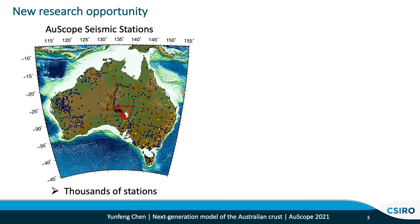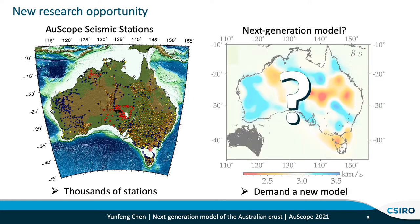There have been some new recent opportunities come along with the AUSCOPE project. Thousands of seismic stations have been deployed over the past 30 years, and more importantly, these data are publicly available and shared among the scientific community. This really established a solid data foundation for conducting various seismic imaging projects. For us, the motivation is straightforward — to explore this exciting dataset and see how we can improve upon the existing model and develop the next-generation seismic model of the Australian continent.